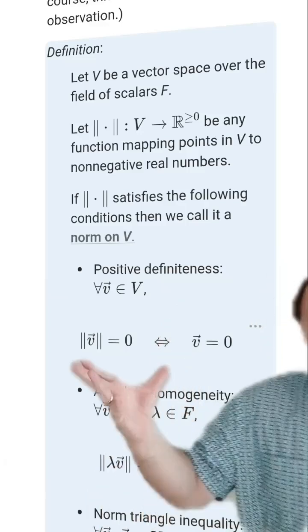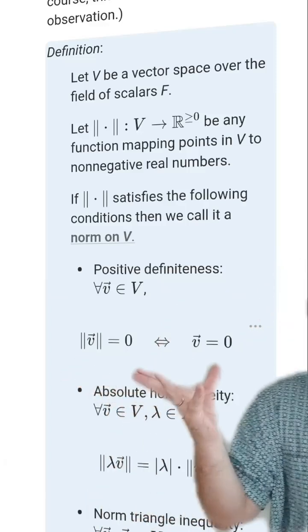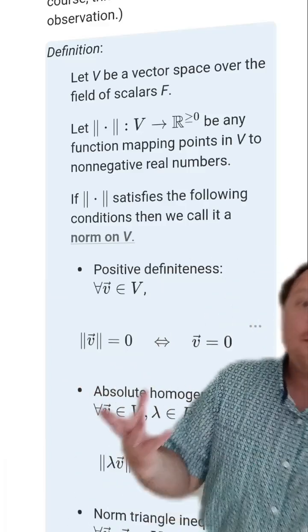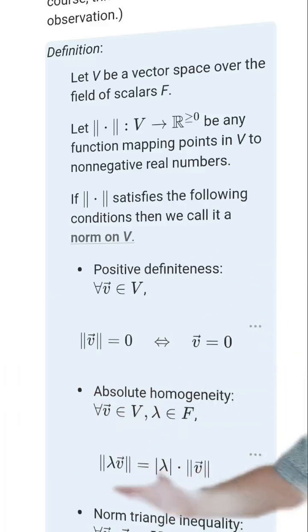This is positive definiteness, which basically just says that the only thing with size zero is the zero vector. It should have absolute homogeneity, meaning that if you take any scalar multiple, then in absolute value it can factor out.